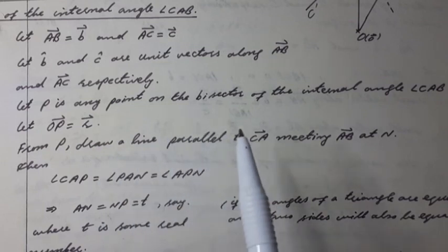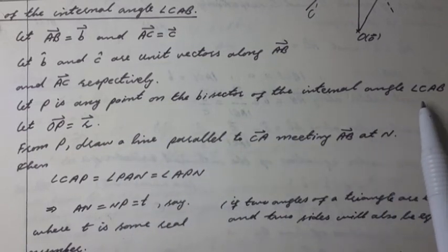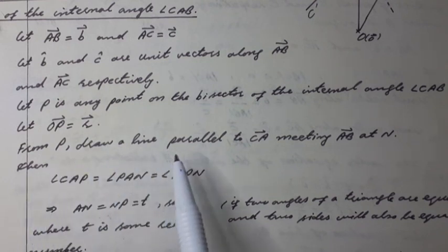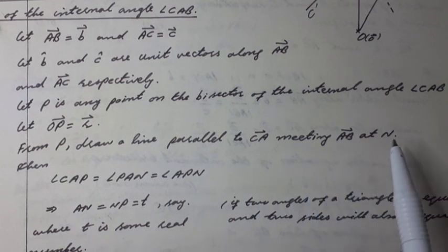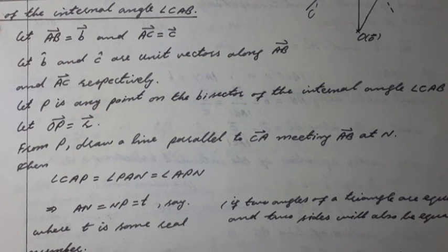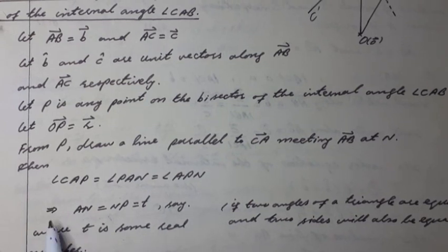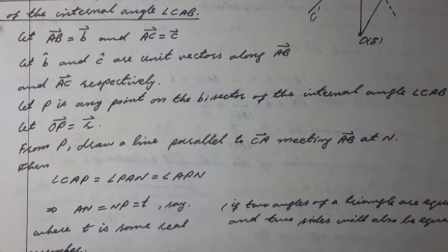Let P be any point on the bisector of the internal angle CAB, as shown in figure. Let OP vector equal R vector. From point P, draw a line parallel to CA meeting AB at N, as shown in figure. Then, as clear from figure, angle CAB equals angle PAN equals angle APN.